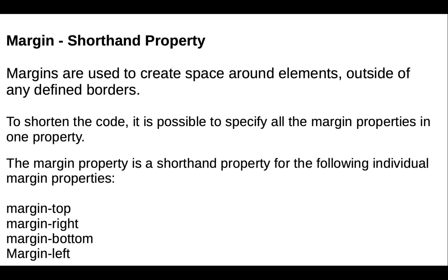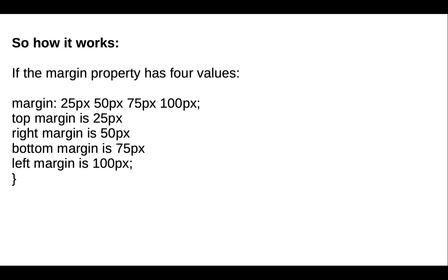Margin is a shorthand property. Margin is used to create space around the elements, outside of any defined border. If you want to shorten the code, it is possible to specify all the margin properties in one property. The margin shorthand property covers margin-top, margin-right, margin-bottom, and margin-left. For example, we create the margin property with values: 25px is the top margin, 50px is the right margin, 75px is the bottom margin, and 100px is the left margin — all in one line.